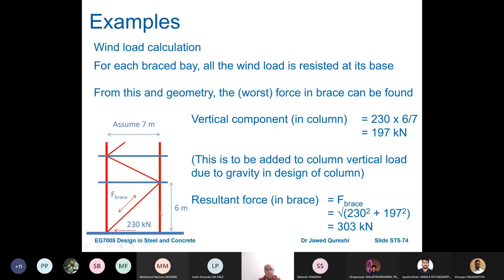All wind is resisted at its base. From this and geometry, the worst force in brace can be found. Vertical component in the column equals 230 times 6 divided by 7, assuming the width is 7. This gives the vertical component in the column. This needs to be added to the vertical load due to gravity in design of column. Resultant force in the brace is summation of vertical plus horizontal load, giving me resultant force in the brace as 303 kN. Once I've got this loading I can design this bracing as a tension member.